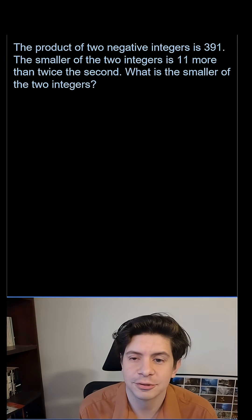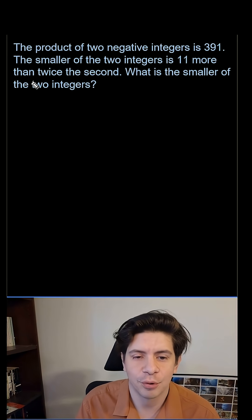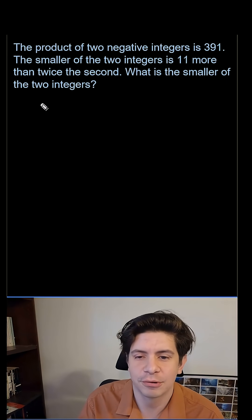The product of two negative integers is 391. The smaller of two integers is 11 more than twice the second. What is the smaller of the two integers?